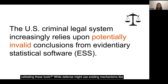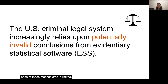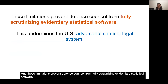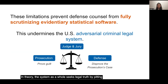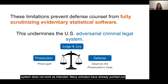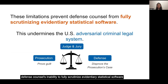While defense might use existing mechanisms like source code review or validation studies to scrutinize evidentiary statistical software, each of these mechanisms is limited, and these limitations prevent defense counsel from fully scrutinizing evidentiary statistical software. This undermines the U.S. criminal legal system, which relies on an adversarial system in which the prosecution is tasked with proving guilt and the defense is tasked with disproving the prosecution's case. In theory, this system seeks legal truth by pitting these two sides against each other in front of a judge or jury, but this system does not work as intended. Many scholars have already pointed out that this system is imbalanced in favor of the prosecution, and defense counsel's inability to fully scrutinize evidentiary statistical software worsens this imbalance.